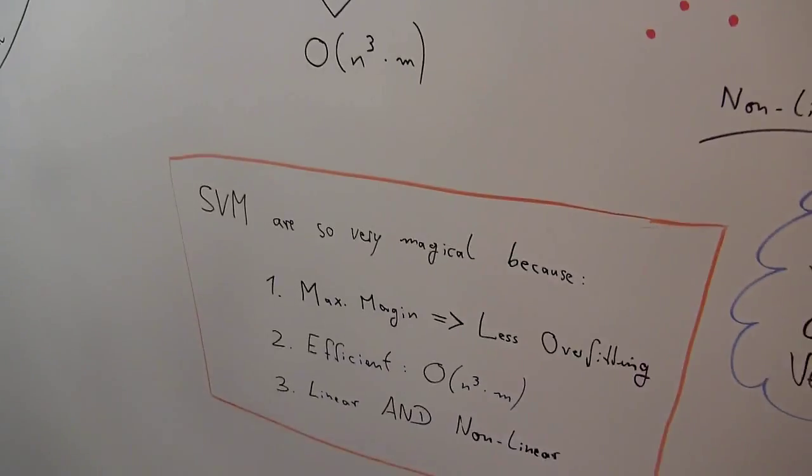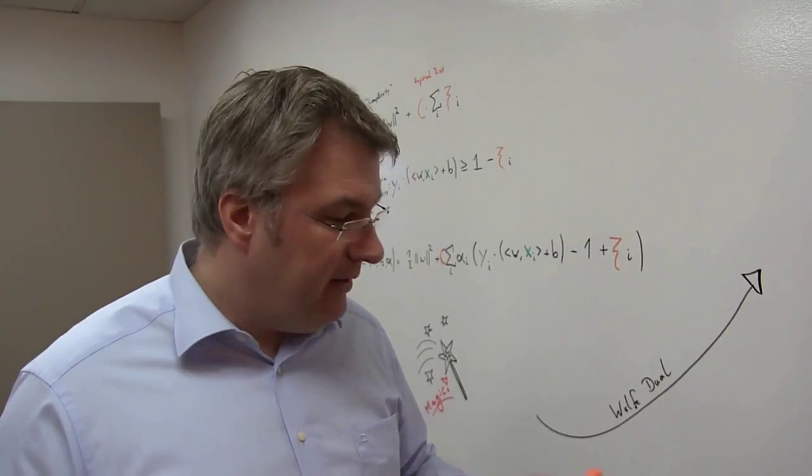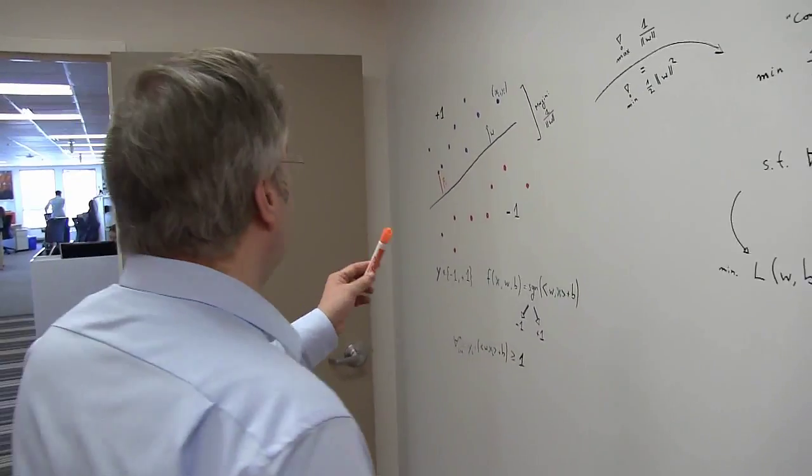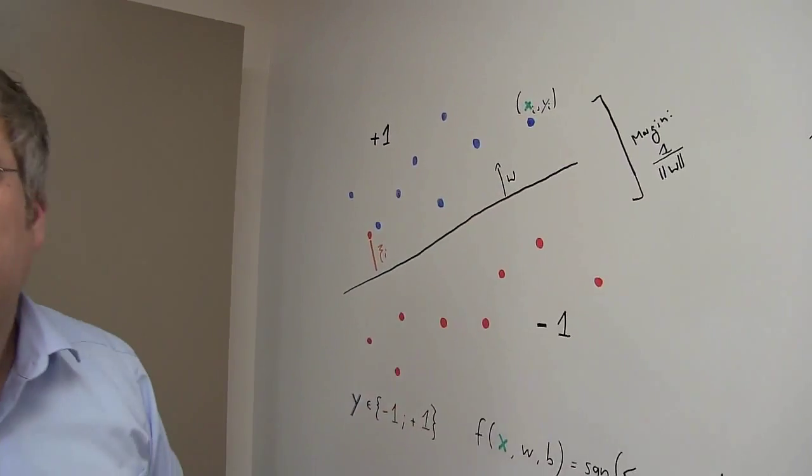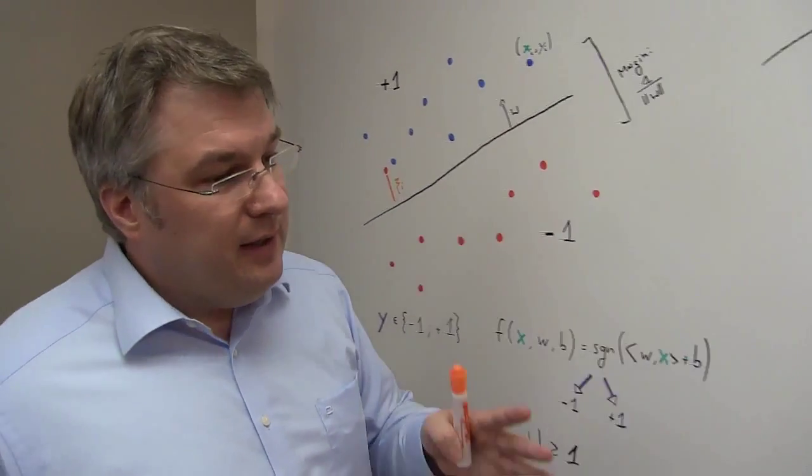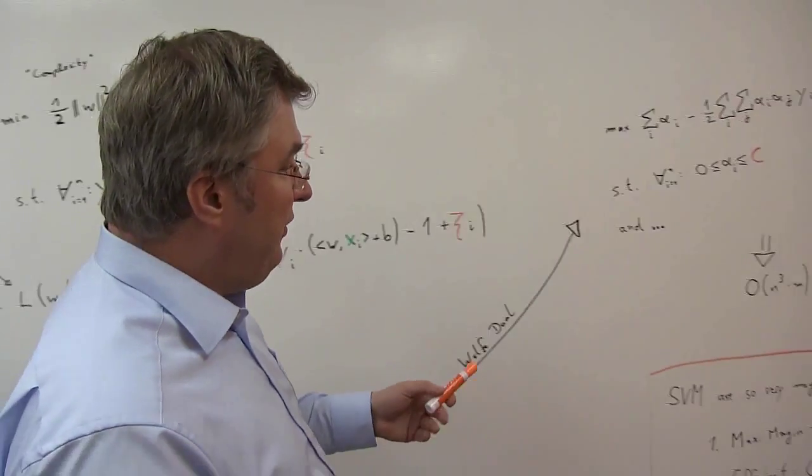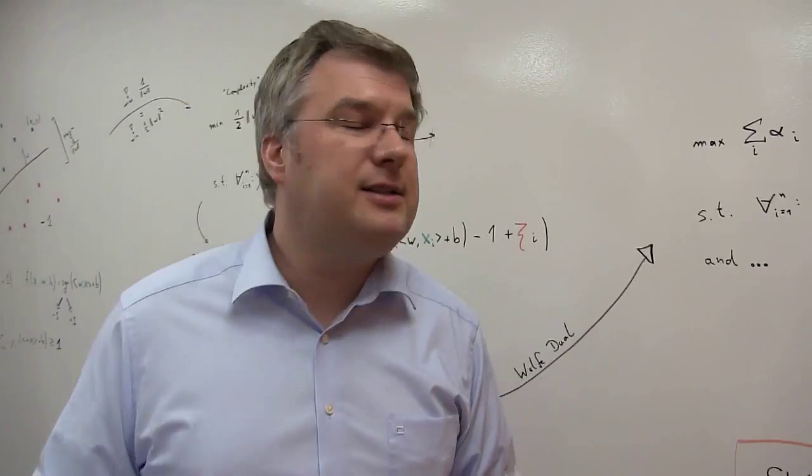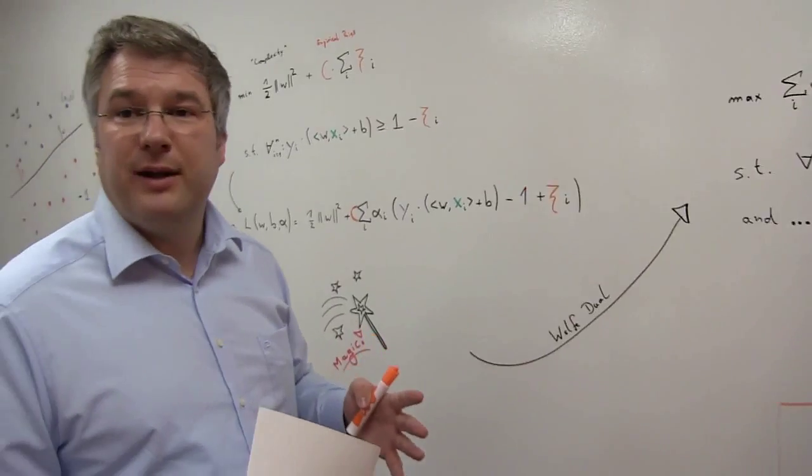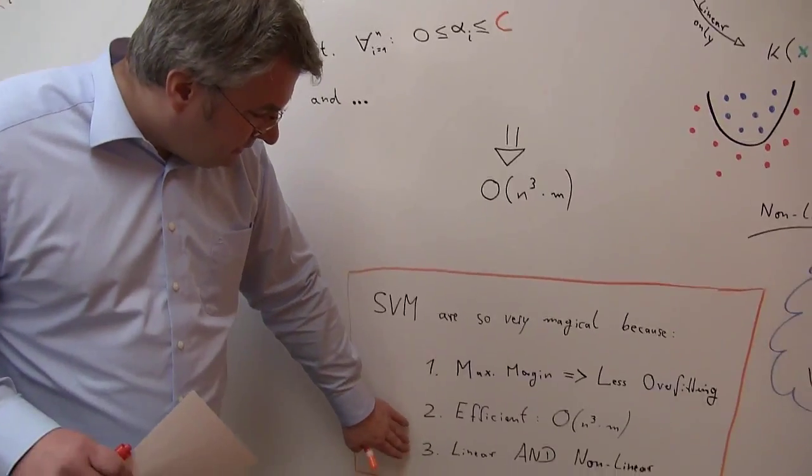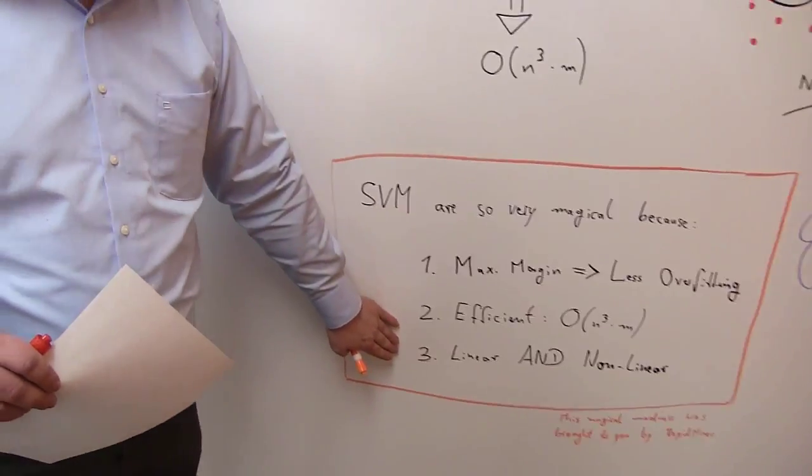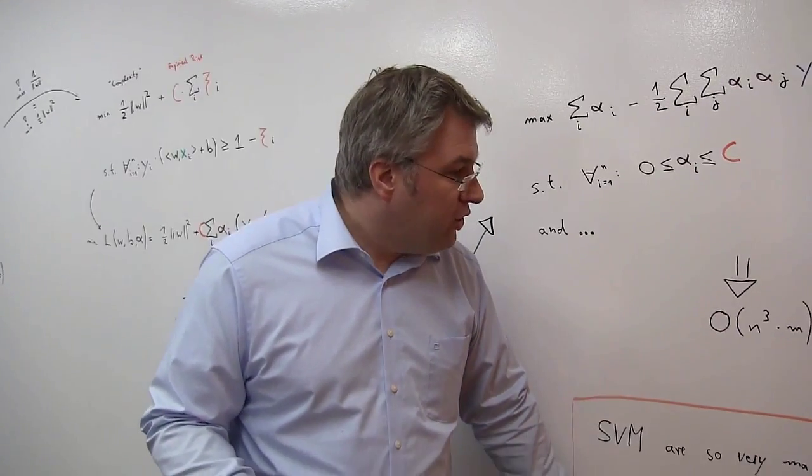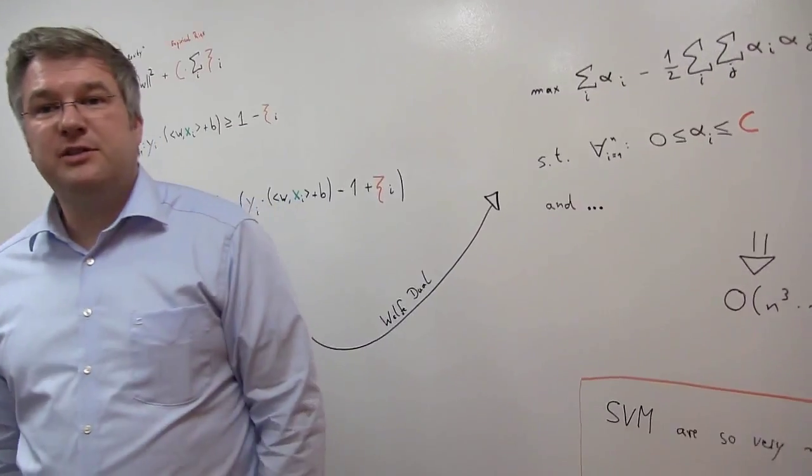So, why are SVMs so very, very magical? Well, they're magical because this maximum margin over here, this concept here means you have less risk of overfitting. They are magical because they are very fast. So if you compare this to deep learning neural networks, all those other techniques, actually, they usually take much more runtime here. And the last point really here is they can solve linear and nonlinear problems. And that's pretty cool as well with the same technique. So that's all good stuff about SVMs.